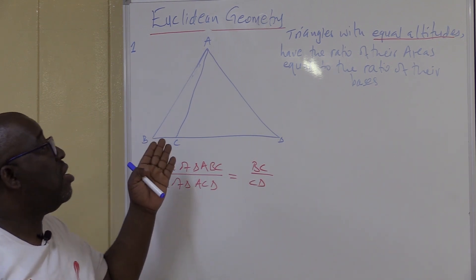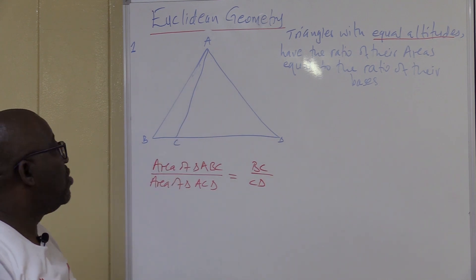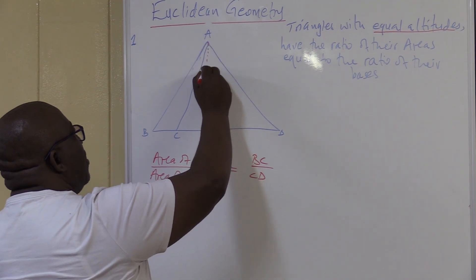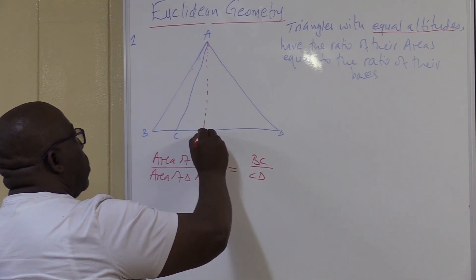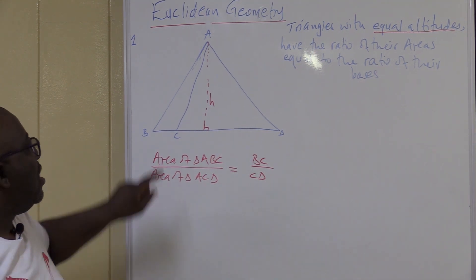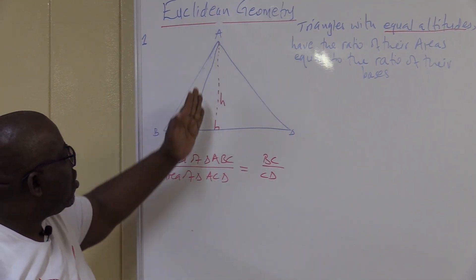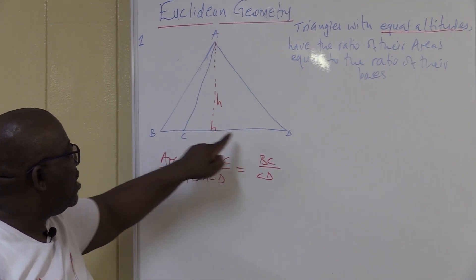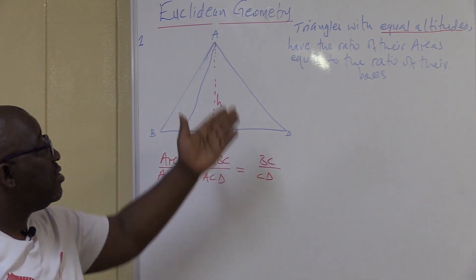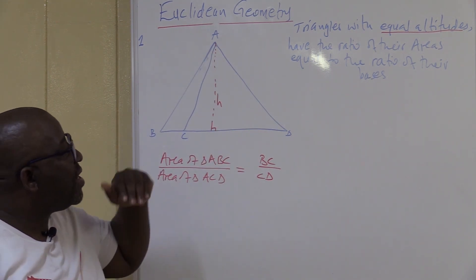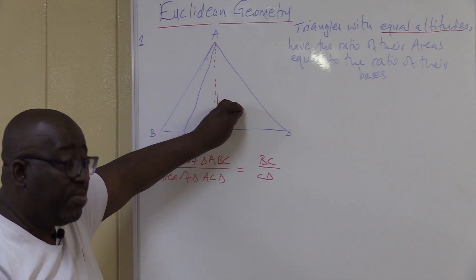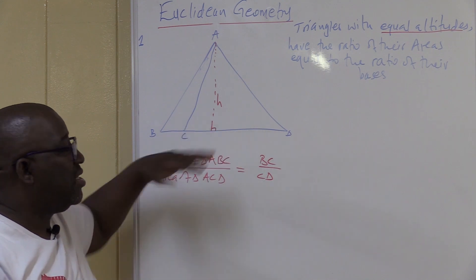However, you can't use this theorem if you don't have equal altitudes for both triangles. Let's create the altitude — from the highest point here, we call it H, the perpendicular height. Triangle ABC has this altitude H, and triangle ACD also has the same altitude. So the theorem says: triangles with equal altitudes have the ratio of their areas equal to the ratio of their bases.